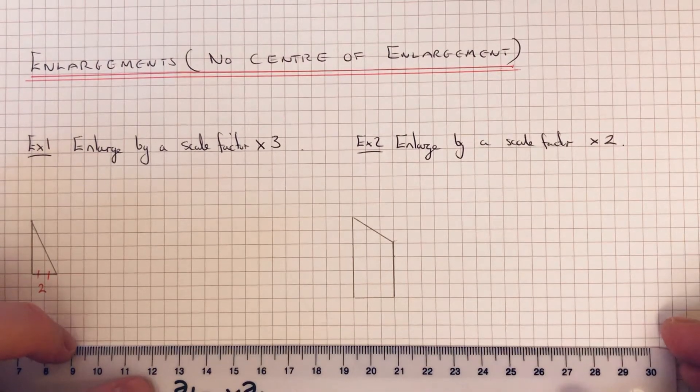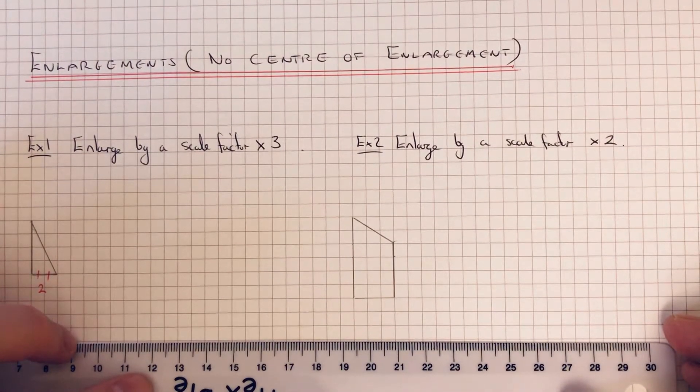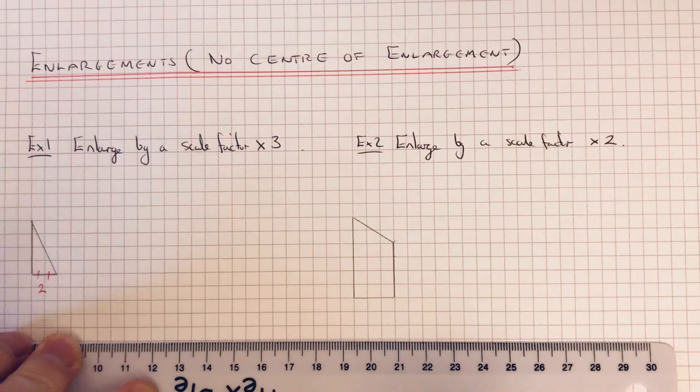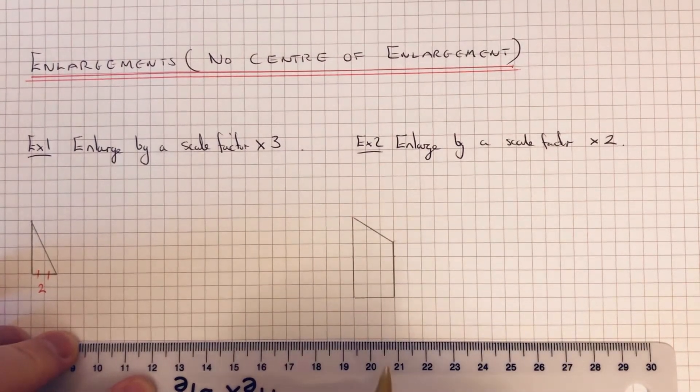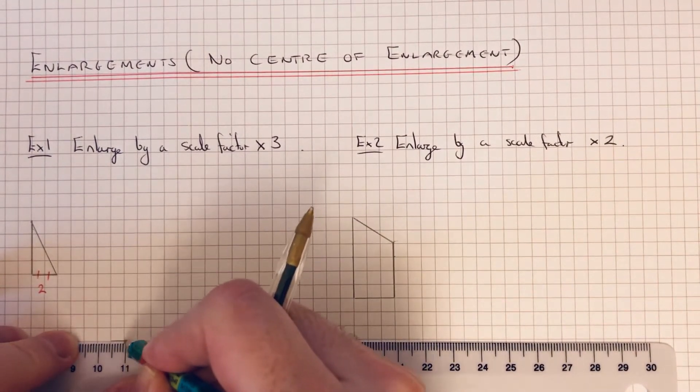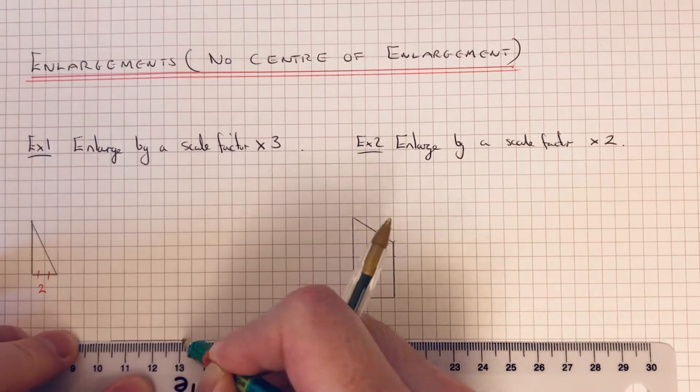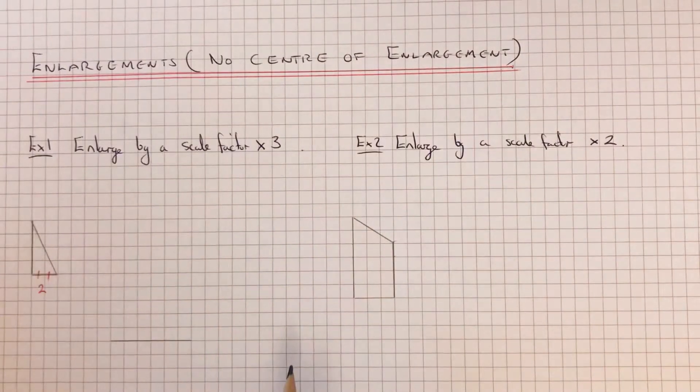Now we can start anywhere that we want to on the squared paper. Just make sure you've got enough room to fit it on. So we need to go six squares across. So there's our base of our triangle.